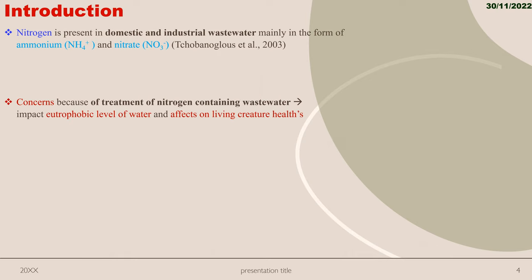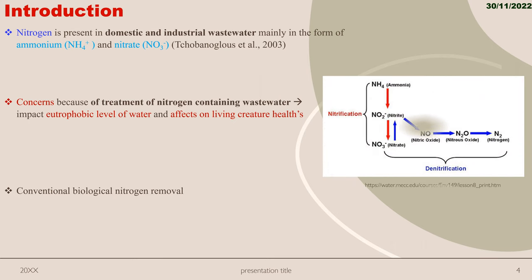One nitrogen removal method is conventional biological nitrogen removal. In this method, there are two steps. First step is nitrification, where ammonia transforms to nitrite and then nitrate, respectively. In the second step, called denitrification, it transforms to nitrous oxide and finally nitrogen.